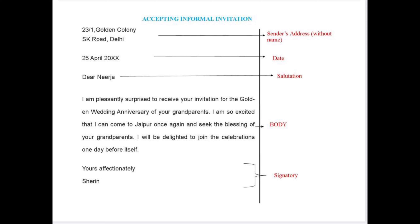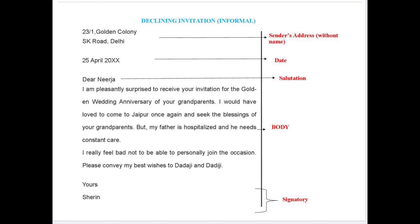Now let us quickly see how to accept an informal invitation. We have the same format here too: first the sender's address without name, then date, then salutation. Then you express your happiness or surprise over being invited for the party or function. Then you can tell that you are eagerly waiting to reach there. At the last sentence you can express your acceptance — for example, "I will be delighted to join the celebrations." You can write all those personal things, and at the end we have the signatory.